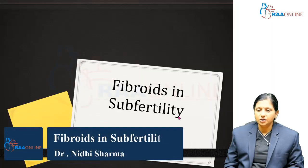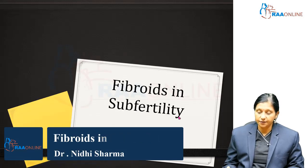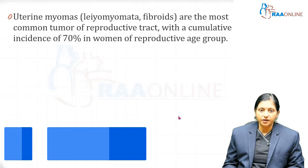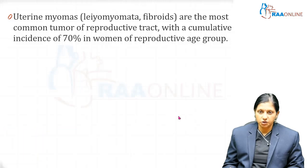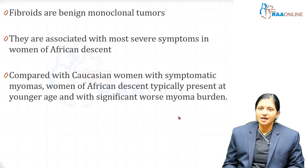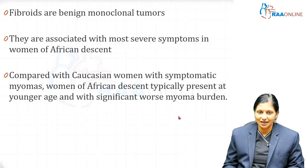Welcome to RAA Online. Today's topic is fibroids in subfertility. Uterine myomas, leiomyomas, or fibroids are the most common tumor of the reproductive tract, with a cumulative incidence of 70% in women of reproductive age group. Fibroids are benign monoclonal tumors. They are associated with most severe symptoms in women of African descent because they are larger in size.